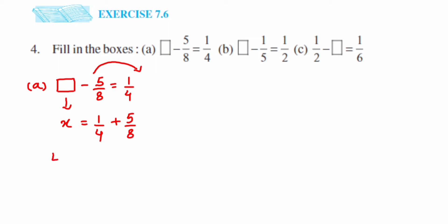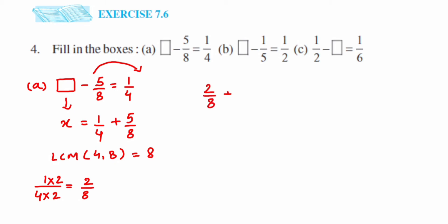Now we cannot solve this further because they are unlike fractions, so we take the LCM of 4 and 8, which is 8, to make them like fractions. For 1 upon 4, we multiply numerator and denominator by 2 to get 2 upon 8. Now adding: 2 upon 8 plus 5 upon 8 — denominators are the same, so we add the numerators: 2 plus 5 is 7. The answer is 7 upon 8, which cannot be simplified further. So x equals 7 upon 8.